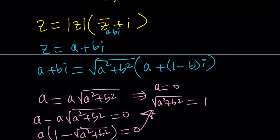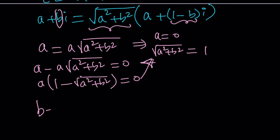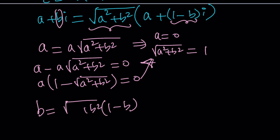Those are the two results from the real part. Now let's look at the imaginary parts. The imaginary part on the left is B. On the right, the imaginary part is the square root of A squared plus B squared multiplied by 1 minus B. Remember, the imaginary part does not contain I itself — it only contains the coefficients. So this equation looks a little complicated; let's hold on to it for now.